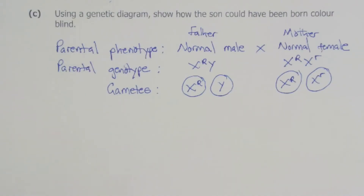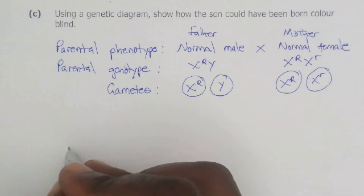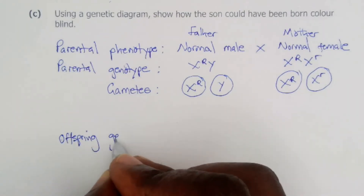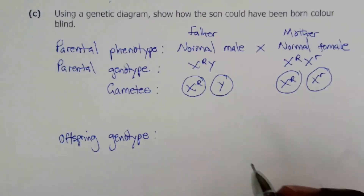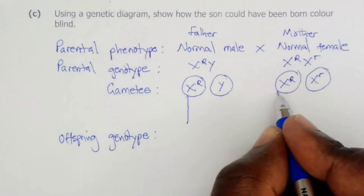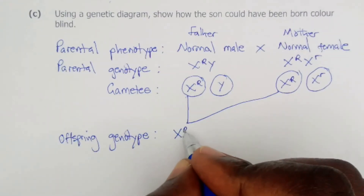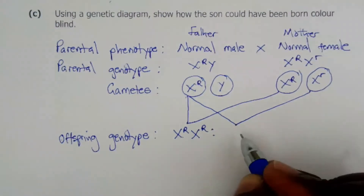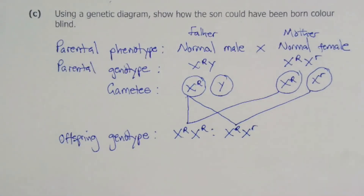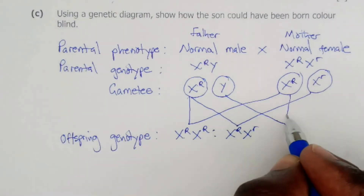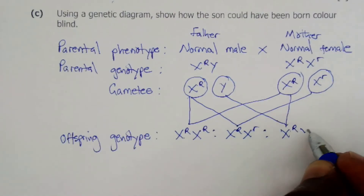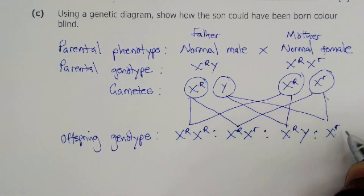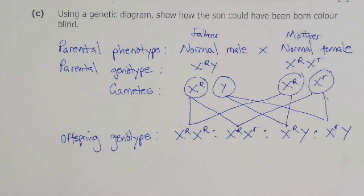The fourth step is to show random fertilization and the offspring genotypes. The possible combinations are: X capital R with X capital R giving X capital R X capital R; X capital R with X small r giving X capital R X small r (a carrier); X capital R with X capital R giving X capital R Y; and X small r with Y giving X small r Y.